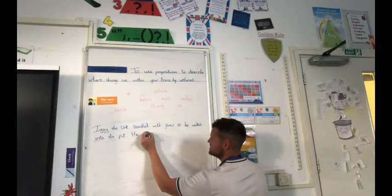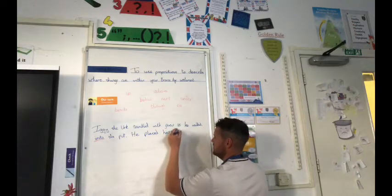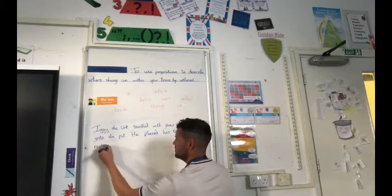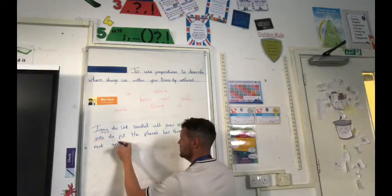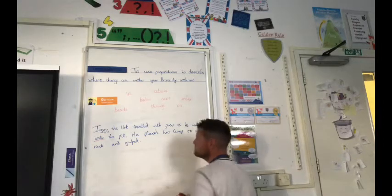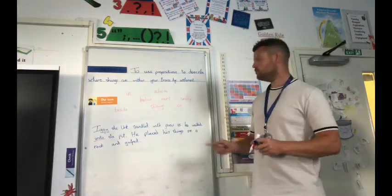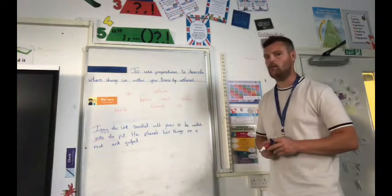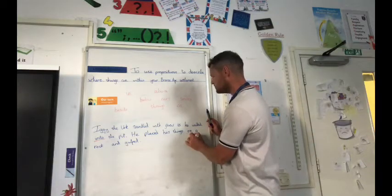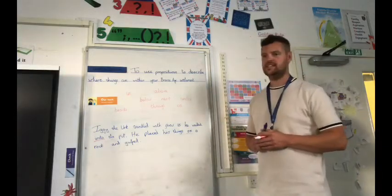So, it's similar to IN, but it is INTO. Let's carry on this sentence. He placed his things on a rock and gulped. He placed his things on a rock and gulped. Where's the where preposition in that one? If you're unsure, look at our word bank up here and it might help you out. So, well done if you got it again. He placed his things on a rock and gulped. So, it's just telling us where something is in relation to something else.